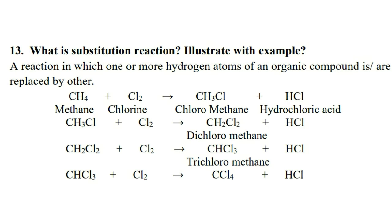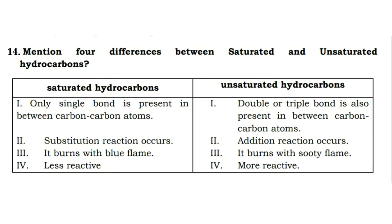Next question: what is a substitution reaction? Illustrate with an example. It is a reaction in which one or more hydrogen atoms of an organic compound are replaced by other atoms. Example: CH₄ + Cl₂ — one H is replaced by one chlorine atom, forming CH₃Cl + HCl. Then from chloromethane, adding chlorine again, one more hydrogen is replaced by chlorine.